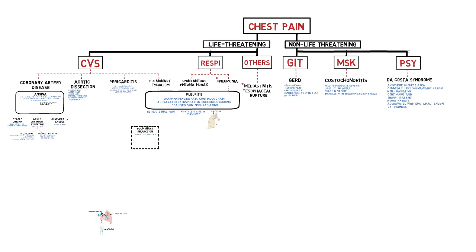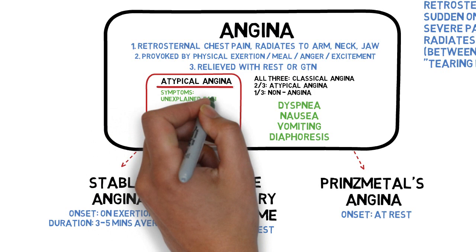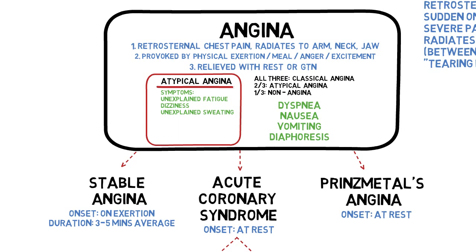Now let's dive into other supporting histories such as associated symptoms and risk factors. Other symptoms that support angina are dyspnea, nausea, vomiting, and diaphoresis. This is due to vagal stimulation because the heart is also innervated by the vagus nerve. It is important to note that absence of angina does not exclude coronary artery disease. Features supporting atypical angina are unexplained fatigue, sweating, or dizziness. We must be aware of atypical angina especially in those who are diabetic, obese, or elderly.